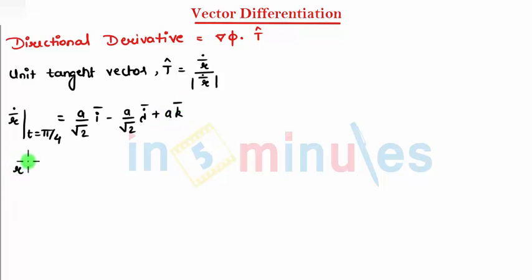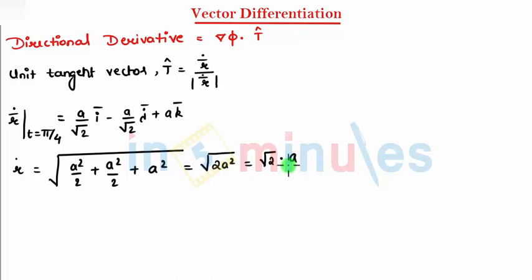We need r dot also, the magnitude. r dot is nothing but under root of a²/2 plus a²/2 plus a², which becomes under root of 2a², which is √2 times a.